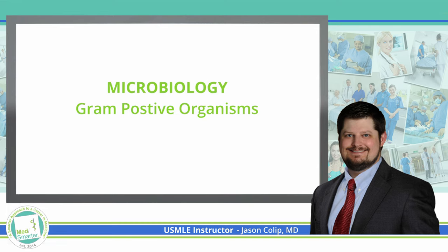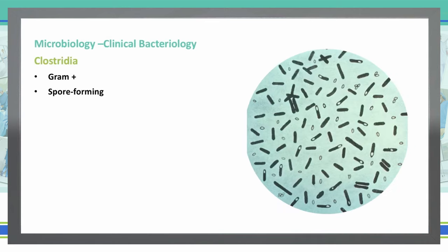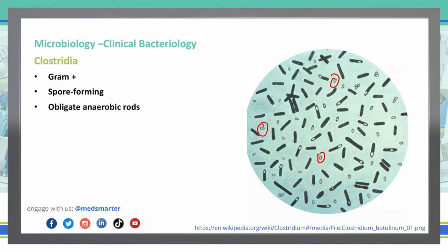This week we're going to talk about Clostridia. Clostridia is a gram-positive organism that forms spores. You can see those spores here in this picture on the right side as these white, almost egg or seed-like shapes. This is Clostridium botulinum with crystal violet stain. Along with forming spores, it is also an obligate anaerobic rod, meaning it cannot function in the presence of oxygen, so it has to undergo anaerobic respiration.